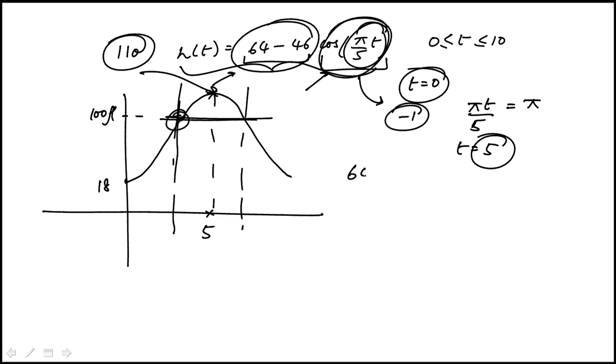What we can do is equate this to 100 and solve for the value of t. This is going to give us minus 36 over 46 equals cosine pi t over 5. I'm going to compute this. Just make sure you keep everything in radians. So 36 divided by 46, that's minus 0.7826.